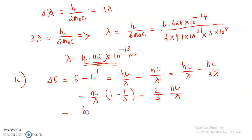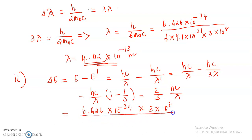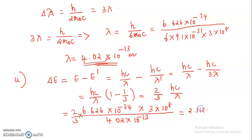Substituting H as 6.626×10⁻³⁴, C as 3×10⁸, and the factor 2/3 divided by lambda 4.02×10⁻¹³ meters, we obtain delta E equal to 2.312×10⁶ electron volts, that is 2.312 mega electron volts.